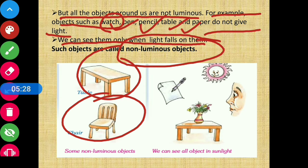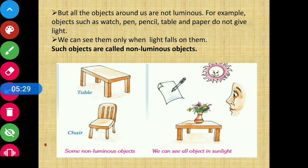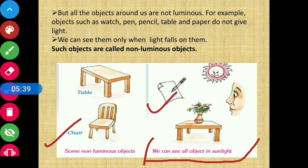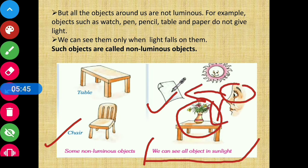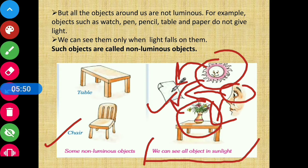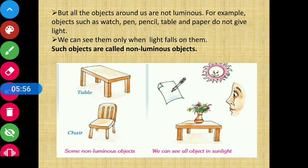Clear. So in the diagram you can see some non-luminous objects. We can see all objects in sunlight — pen, paper, table, and flower vase — in sab cheezein hume tabhi dikhti hain jab suraj ki roshni, sunlight, in sab pe padegi. Agar koi bhi light nahi padti hai to hum inhein nahi dekh payenge. So this was about luminous and non-luminous objects.